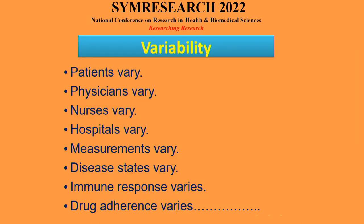Why am I standing here in front of doctors, biologists, or non-mathematicians? Because there is a lot of variability — patients vary, physicians vary, nurses vary, hospitals vary, measurements vary, disease patterns vary, immune response varies, drug adherence varies. There is no place where there is no variation. Even twins are not the same.